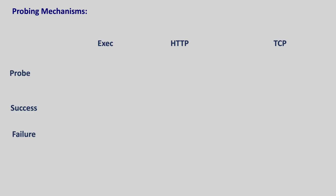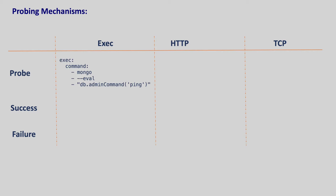Kubernetes provides some basic probing mechanisms. The first mechanism is exec — we ask Kubernetes to execute a command within the container. Kubernetes assumes a container is healthy if the command exits with a zero code and unhealthy if it gets a status code of one.